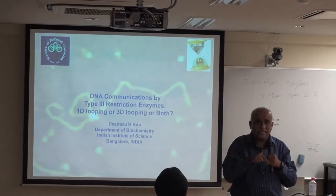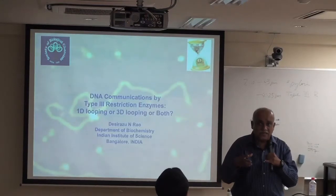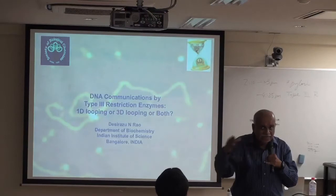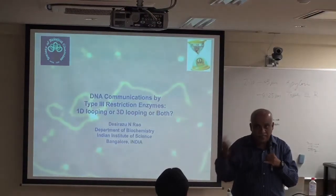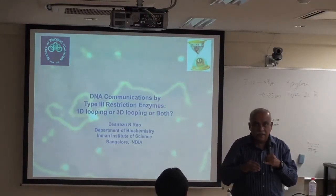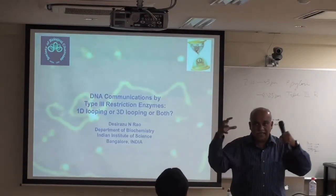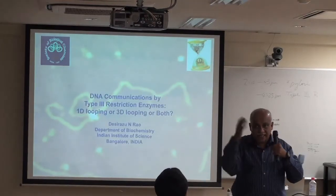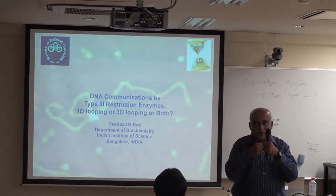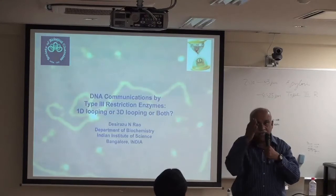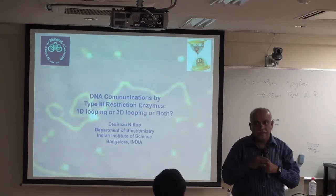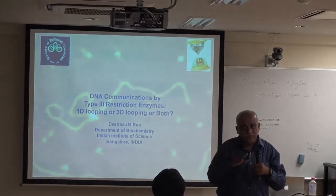With type 1 enzymes, ATP hydrolysis energy was important for DNA coverage, while the actual phosphodiester cleavage requires magnesium. These enzymes also involve two recognition sequences: two enzyme molecules bind, then move along DNA, and wherever they collide, they cut. Most people thought type 3 enzymes behaved similarly to type 1, with some differences.